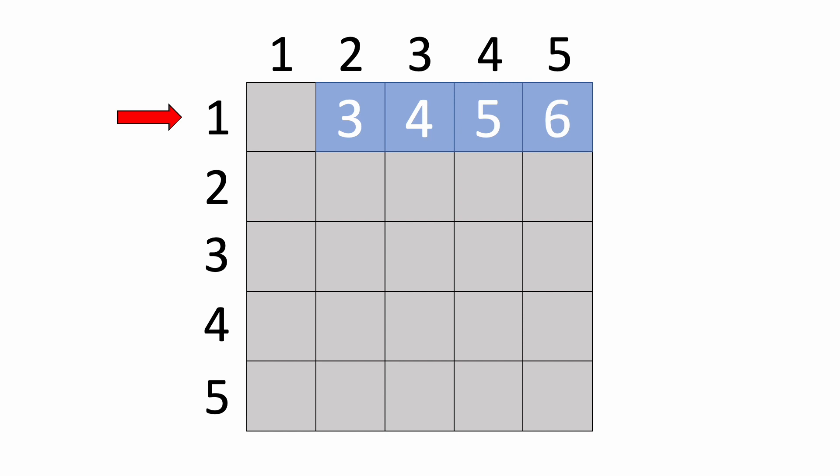If the target wasn't in any of those, we'd have to now calculate all the sums that include 2. We already calculated 1 plus 2, so we don't need to calculate 2 plus 1. And again, we can't use 2 and 2, so we start with 2 plus 3, which is 5. Then 2 plus 4, then 2 plus 5.